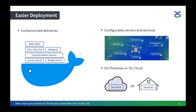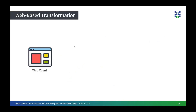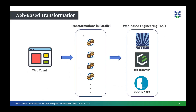Because we are Docker-based, we can quickly update security issues related to servers, such as changing installer packages and keeping servers and services up to date. The web client is the front end for users, whereas the model server and databases are in the back end — and critically, these can now be updated independently. Moving on to web-based transformation: with the web client and Docker deployment, you can now perform multiple transformations in parallel. We currently support three web-based engineering tools: Polarion, codeBeamer, and DOORS Next.